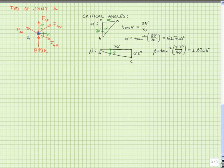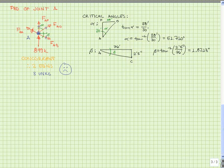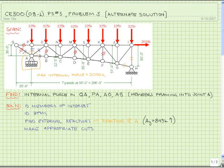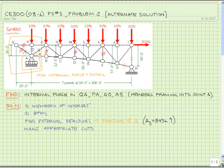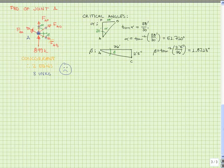But we have a problem: this is a concurrent force system, which means we only have two equations of equilibrium. So how can we solve for the unknowns? Well, we actually only have three unknowns because QA is a zero force member — but that's still three unknowns with only two equations. So we need to make an additional cut. Coming back to our original schematic, let's make a cut through this portion and see if we can use that to find the force in members AO and AB. Knowing those two, we can then return to this free body diagram and solve for the force in member AP.